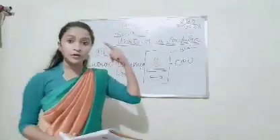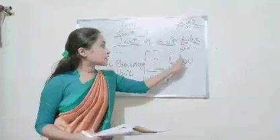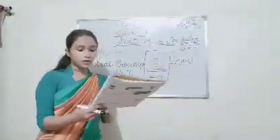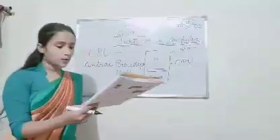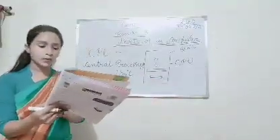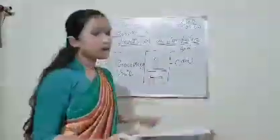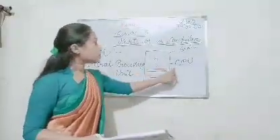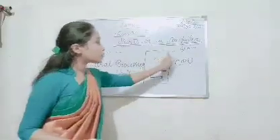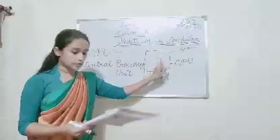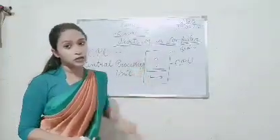In our human body, the brain stores everything we learn. Similarly, the computer also has a brain — CPU is the brain of a computer. CPU stands for Central Processing Unit. It is present inside the CPU box, and it helps the computer to work according to the given commands.